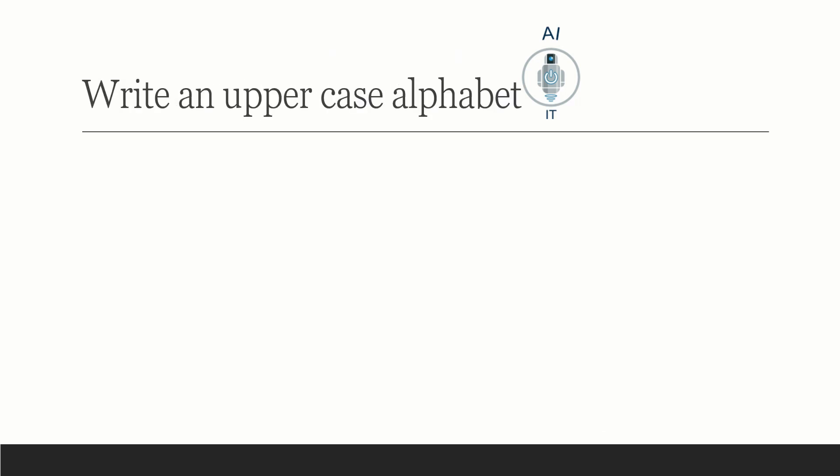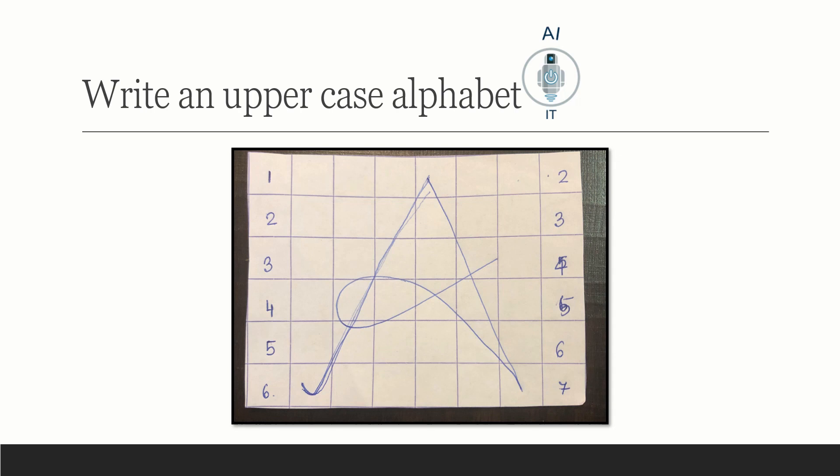Now let us write an uppercase alphabet. We have to write this in such a way that the height of the alphabet should be equal to the height of the matrix. In other words, it should start from the bottom line of the matrix till the top line. We can write any capital alphabet in any handwriting or font.